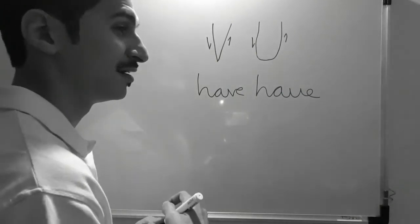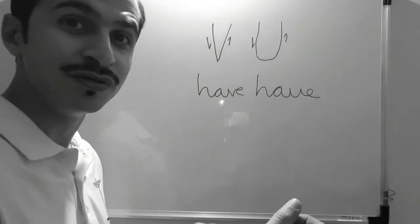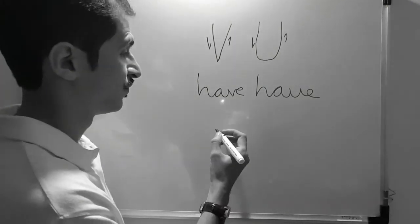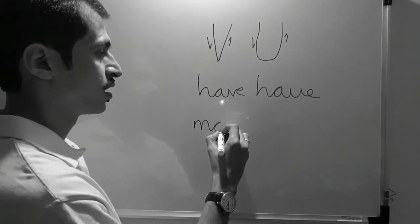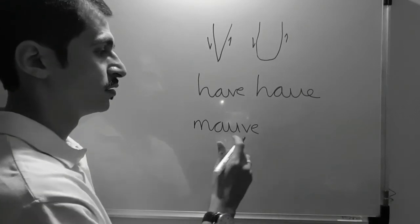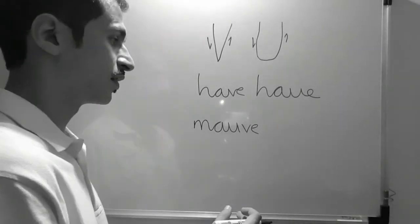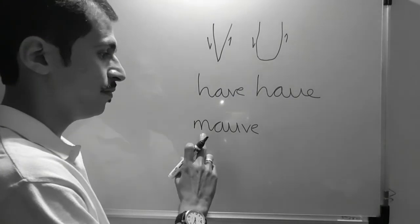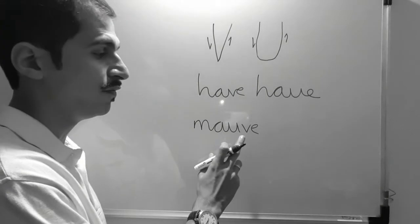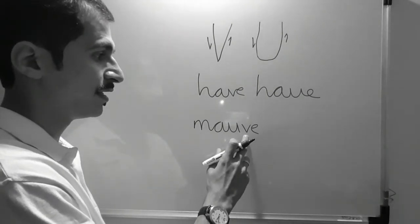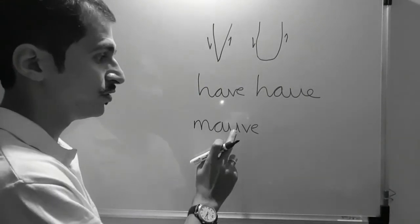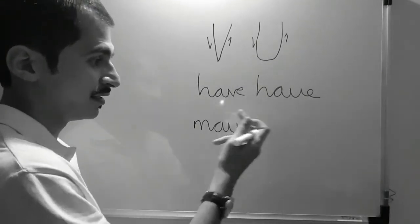Some people write a letter U and they replace it by letter V. Let's take another example. Now this is a word called as mauve. It's a kind of a color. And M A U V E. Now I know that U comes first and V comes later. Some people write letter V as letter U which we saw here. Some people write letter U as letter V.